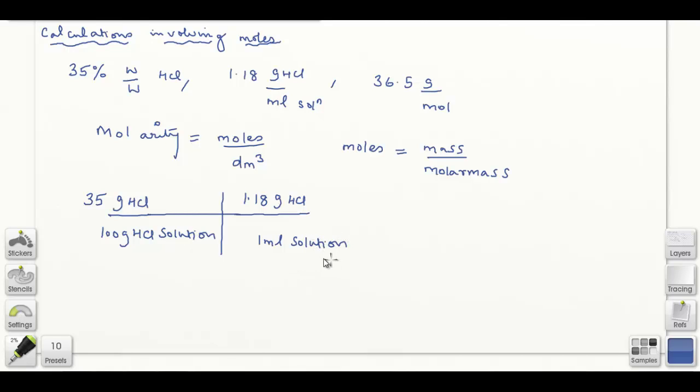One milliliter of solution weighs 1.18 grams, which includes the hydrochloric acid plus water to account for the solution. Now we have the volume, and the two mass units can cancel out.